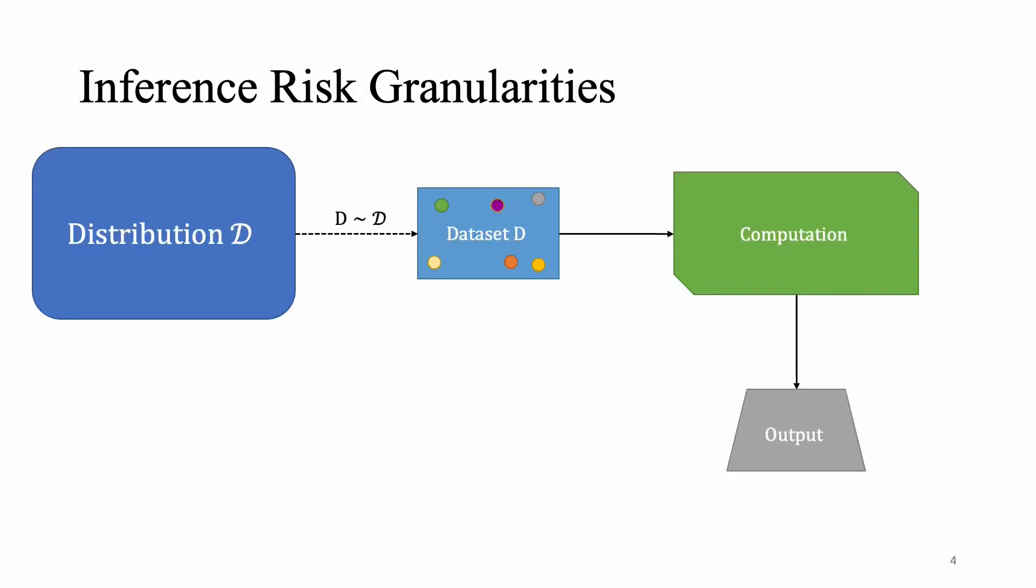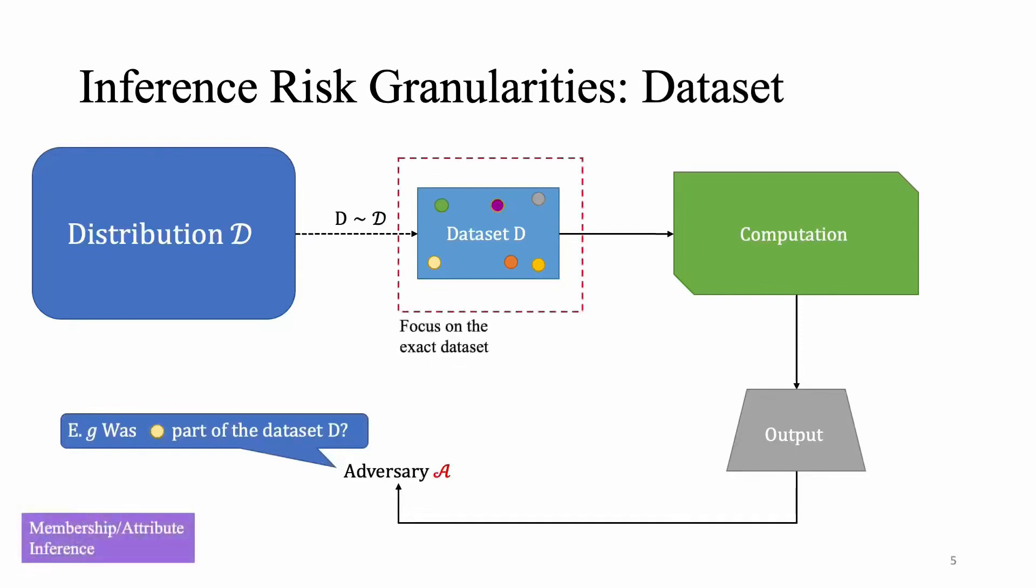The most well studied level of inference risk granularity is data set inference and the most popular example perhaps is membership inference, where you're given a machine learning model and you're trying to infer whether a particular point was part of the training data set or not. And there's tons of work in both in terms of attacks, defenses, as well as theoretical contributions.